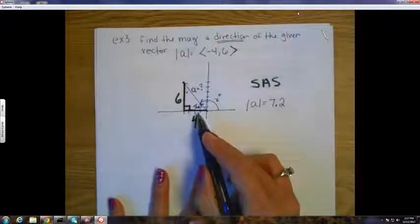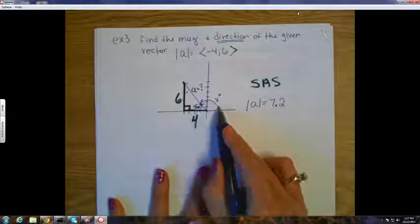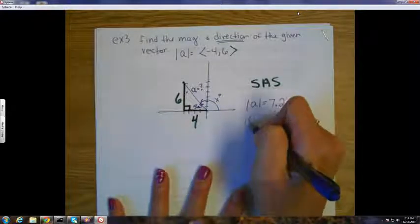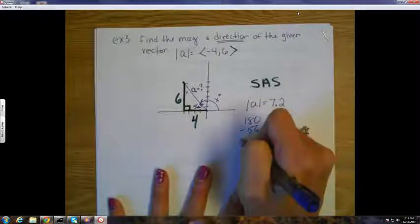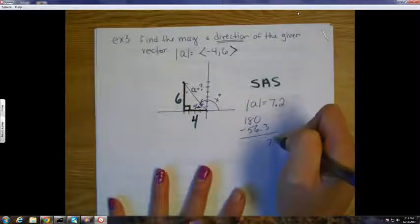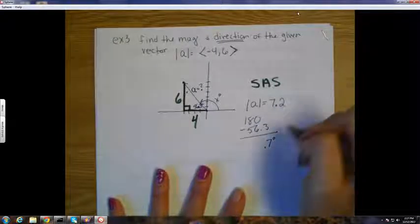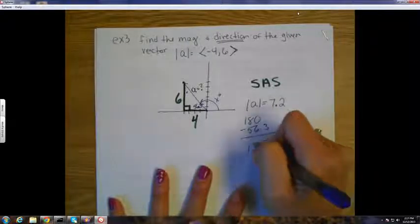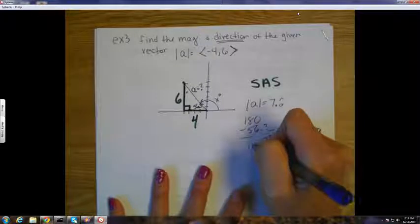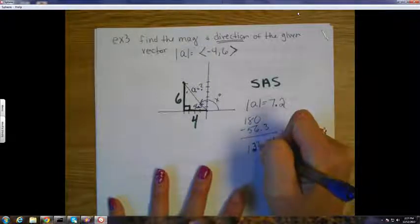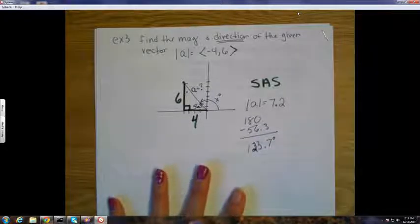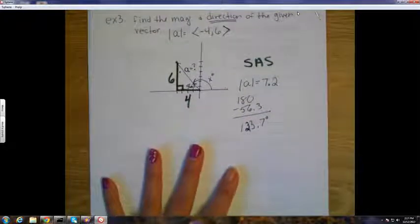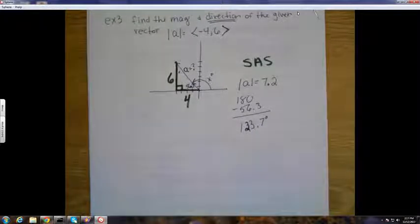So what we want is the rotation which is outside the triangle. Well, how do I get that? And not that I can do that in my head. 133? 133.7 is the direction. Questions there? Cruising right along?